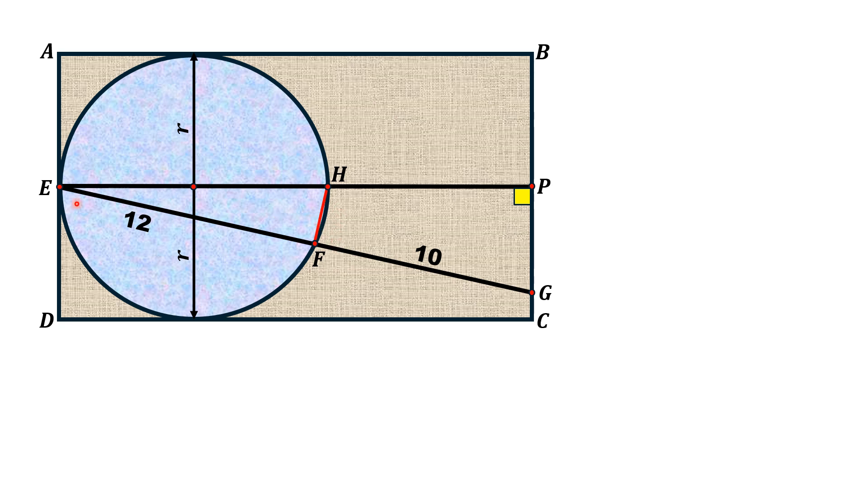Since EH is the diameter of the circle and F is a point on the circle, then by circle theorem, this angle must be 90 degrees.